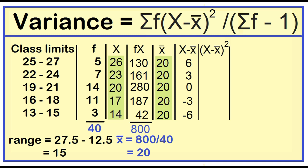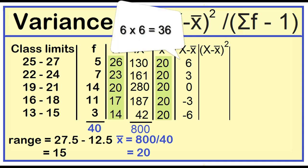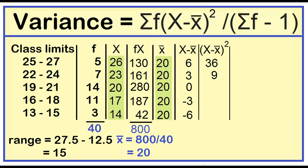Next, square the deviations. 6 times 6 is 36. 3 times 3 is 9. 0 times 0 is 0. Negative 3 times negative 3 is 9. Negative 6 times negative 6 is 36.